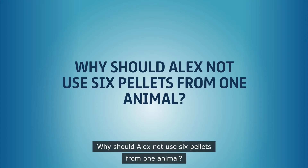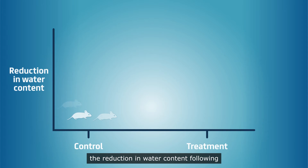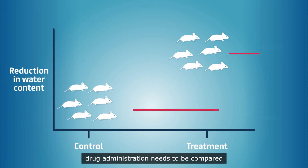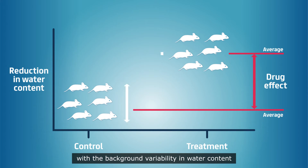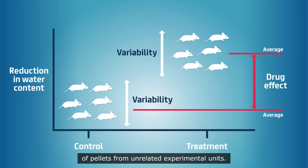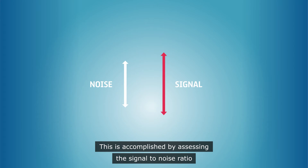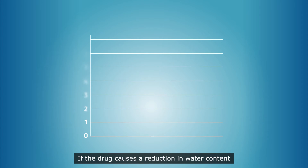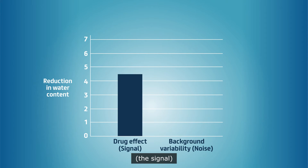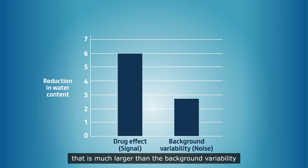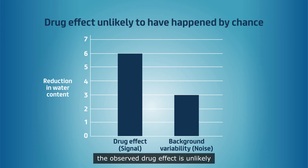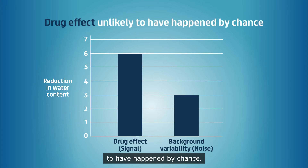Why should Alex not use six pellets from one animal? Mo explains that when deciding whether or not the drug is effective, the reduction in water content following drug administration needs to be compared with the background variability in water content of pellets from unrelated experimental units. This is accomplished by assessing the signal-to-noise ratio. If the drug causes a reduction in water content — the signal — that is much larger than the background variability, the noise, the observed drug effect is unlikely to have happened by chance.